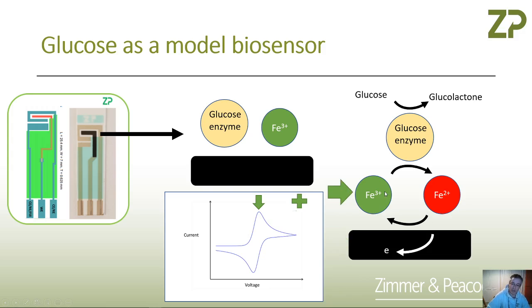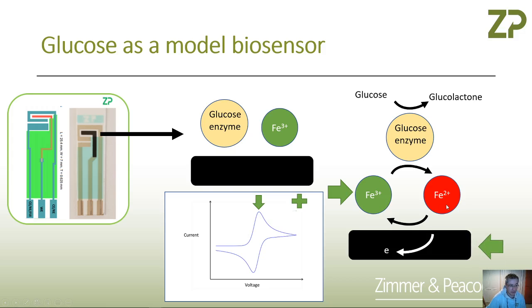Once you're in biosensor development, you often put so much mediator in there that it's not a limiting factor — you don't want that to be the rate-limiting step. You're also applying a voltage where the kinetics of re-oxidation of the mediator have electron transfer kinetics so fast that the cyclic voltammetry is kind of interesting, but it's not dictating the outcome because you're applying so much overvoltage anyway.